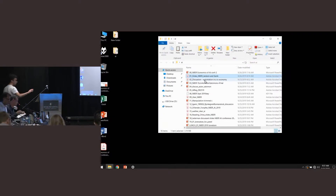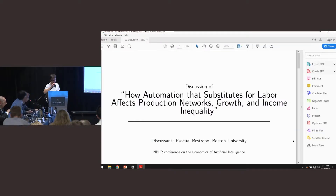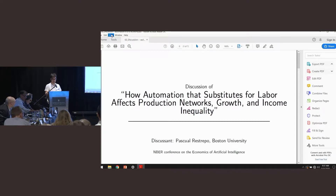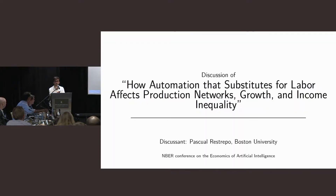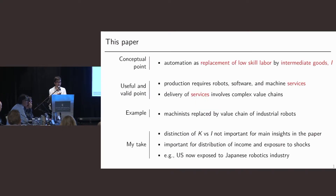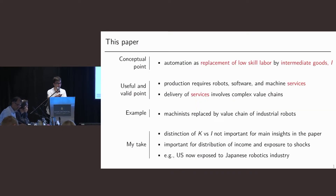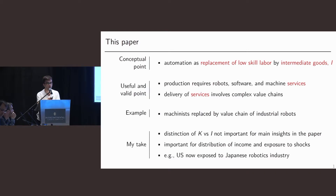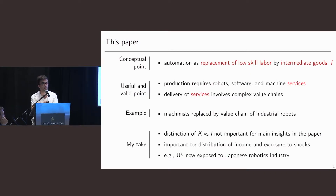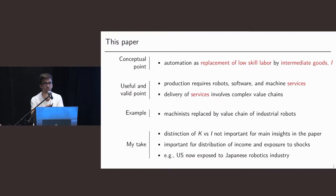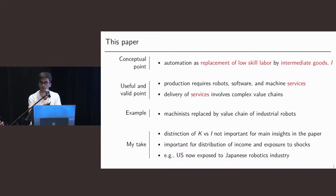Okay, thank you, Pascual. So thanks to the organizers for inviting me to discuss this paper, which I found very interesting. The main thing that this paper is trying to do is understand the effects of automation on productivity and labor demand in an economy where low-skilled labor is being substituted by intermediate goods. That's different from the traditional literature on automation, which has been thinking about substitution by capital.